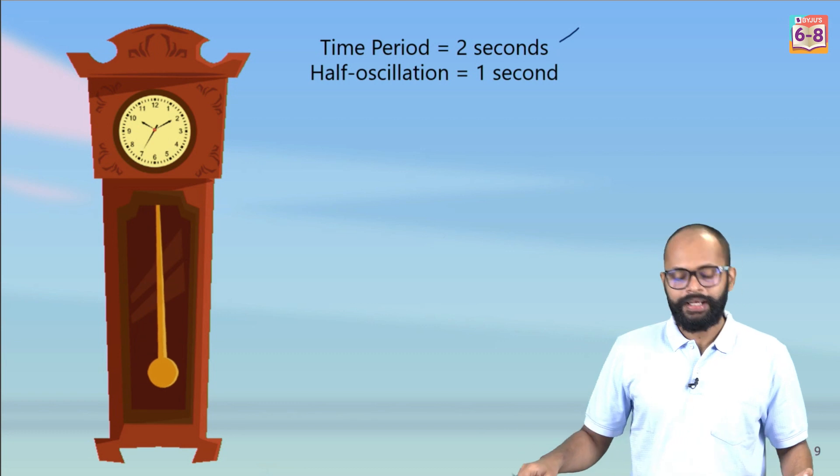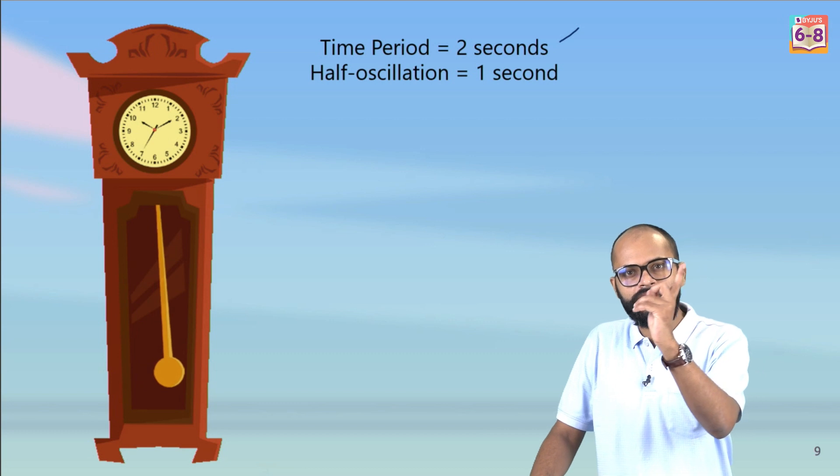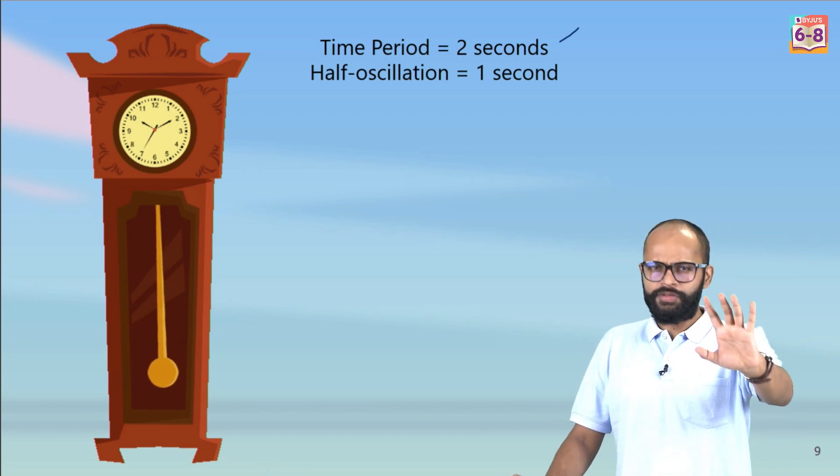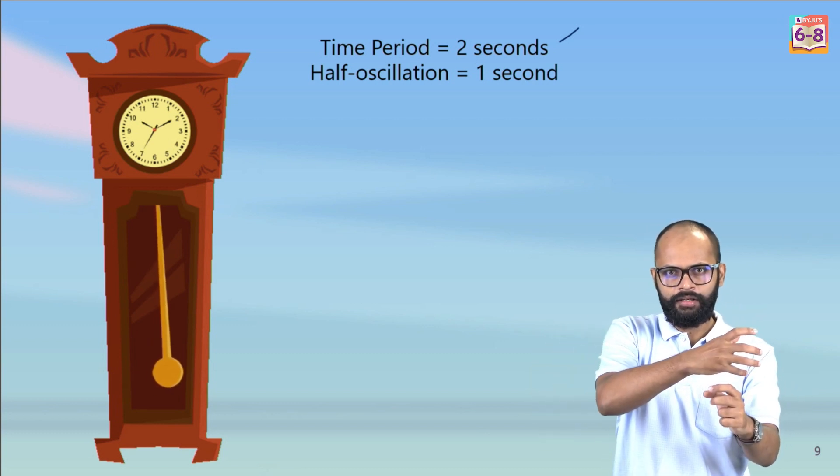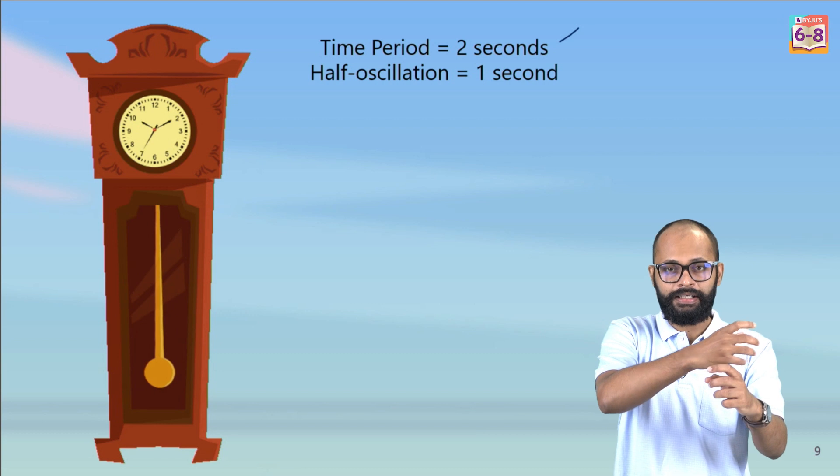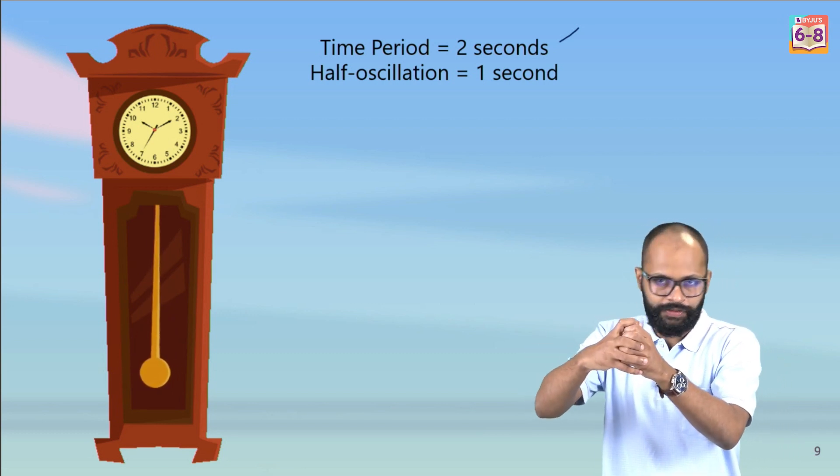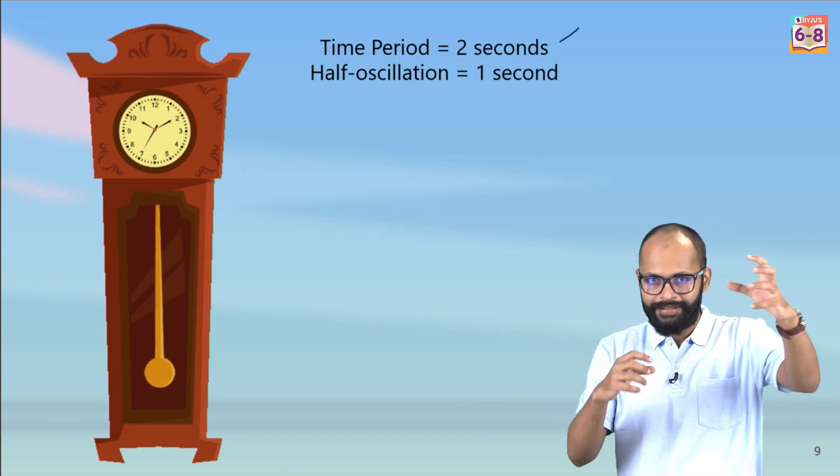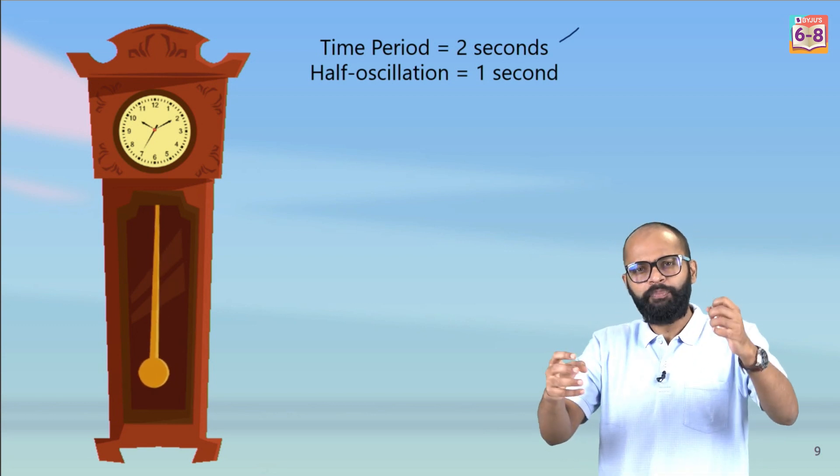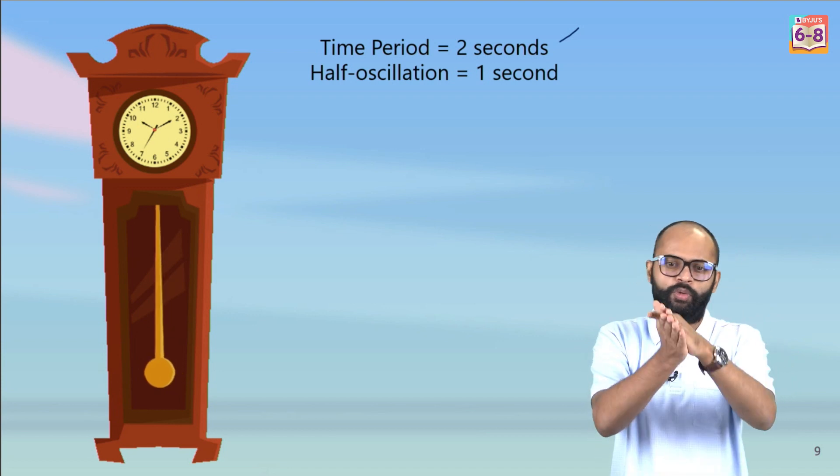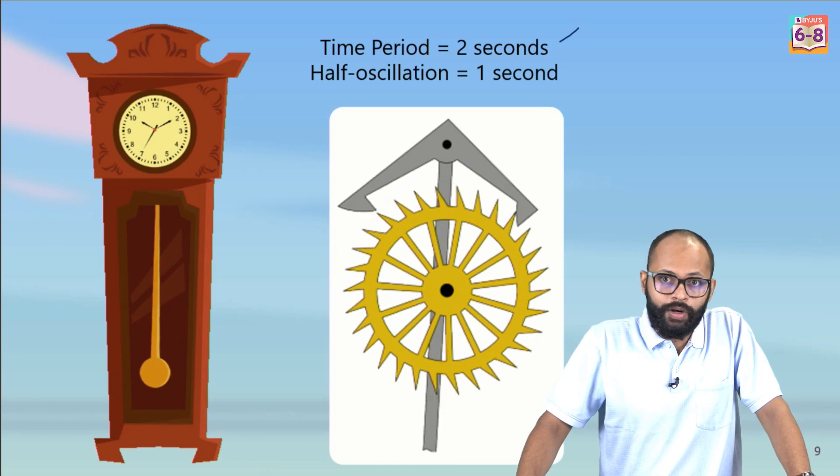So this is how we understood that a pendulum clock, the time period is two seconds, half oscillation is one second. And you know what, you'll realize this whenever you see a grandfather clock, you will see a slight tick kind of sound, tick tick tick. This one tick is one second, and why is this tick? Because it gets locked and the gears are turning because of this. So gears are supporting the pendulum, they don't let it stop, overcoming the friction, give a slight push to it, and pendulum is moving the gears. So it's kind of a supported motion to each other.